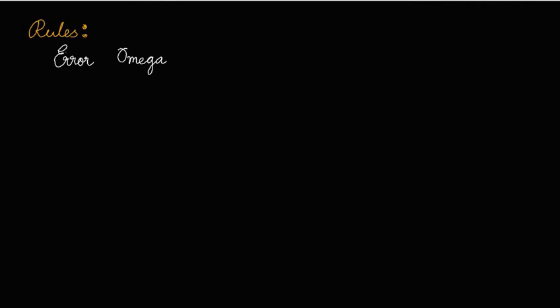Then come the rules. For the inverted pendulum, someone in the lab has experience with it, and based on his experience, that engineer or researcher gives us a table of rules involving error and omega as inputs and the observed current. He says: if error is zero and omega is zero, then current is zero.